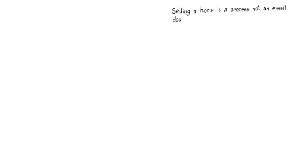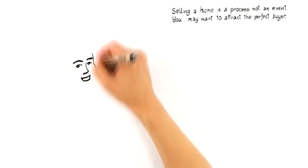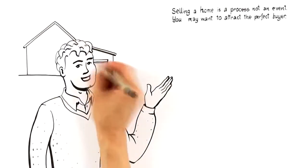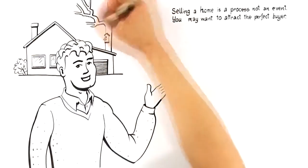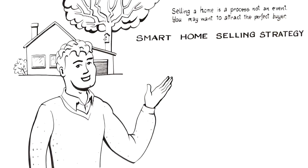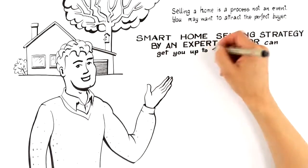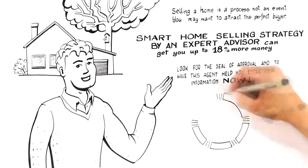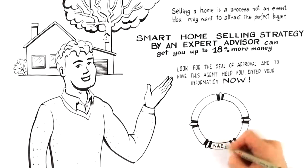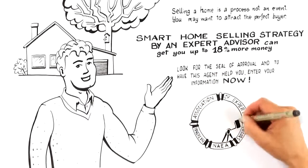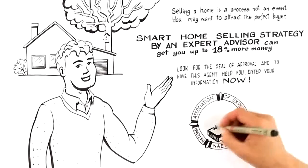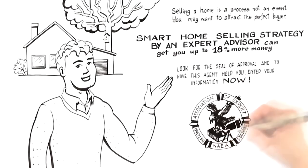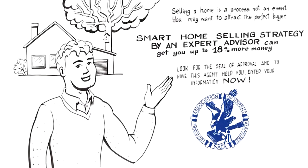By now you know selling a home is a process, not an event. You also learned how to hire an expert who can attract the perfect buyer willing to pay top dollar for your home. So if you're selling, the next logical step is to request a free, no-commitment smart home selling strategy from an expert advisor. Expert advisors are members of the National Association of Expert Advisors who are trained and certified to prepare a smart home selling strategy that can sell your home faster and for up to 18% more money than the traditional real estate agent. Look for the seal of approval, and to have this agent help you, call the number now.